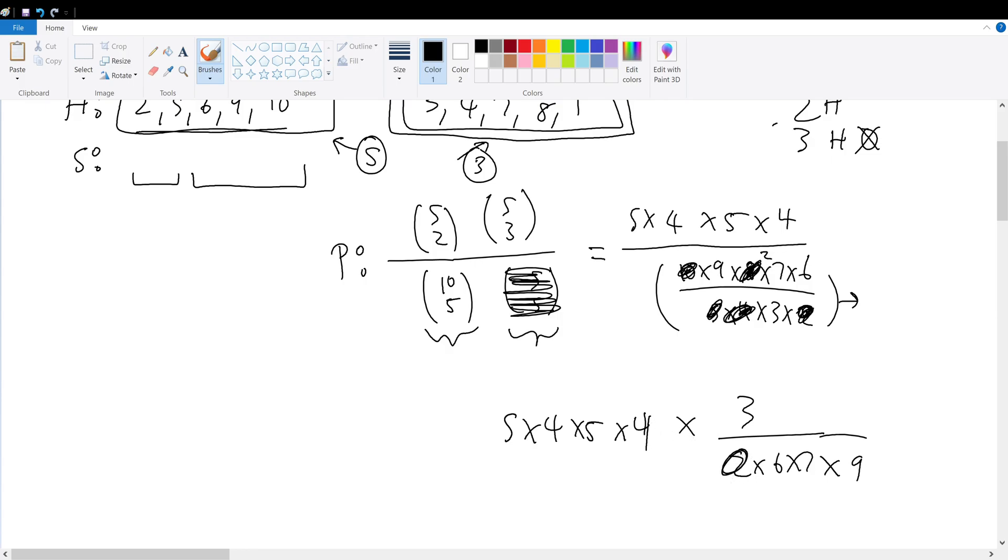5 times 4 times 5 times 4 times 3 over 2 times 6 times 7 times 9. Notice I'm not combining anything yet. I want to simplify first. So let's further simplify. This becomes 2. 2 and 6 get cancelled into 3, but the 3 and 3 gets cancelled. Now, what else can we do? We can do nothing else. So now we can combine. 7 times 9 is 63. 25 times 4 is 100. Okay, so obviously we did something wrong here.